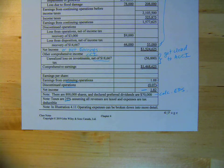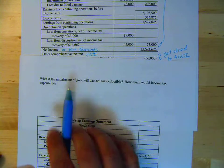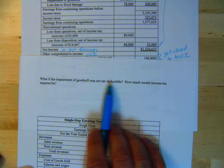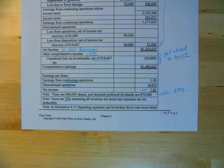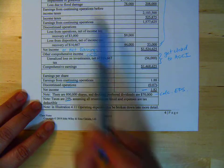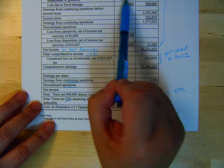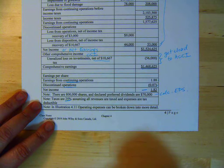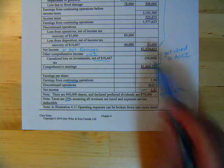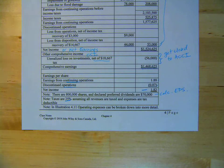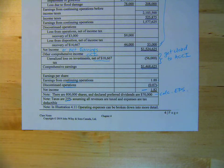Don't turn the page over yet. What if the impairment of goodwill was not tax deductible? How much would income tax expense be? Take a second — we're saying: impairment of goodwill was not tax deductible. How do I calculate income taxes then? Put it on pause, try doing this question so that you've thought about it and are able to get something straight in your head. You can put it back on when you're ready to see if your answer is right.